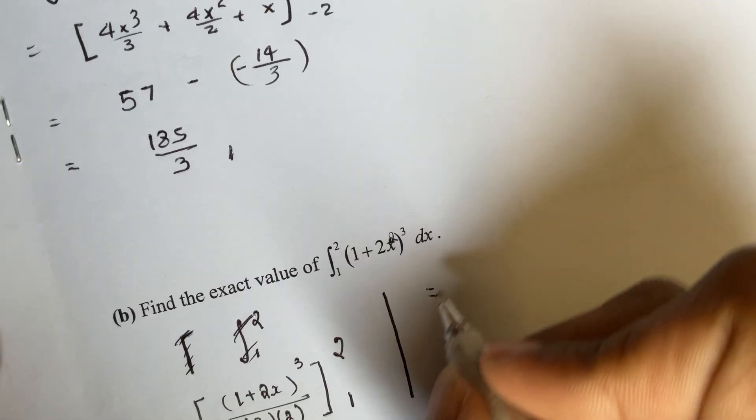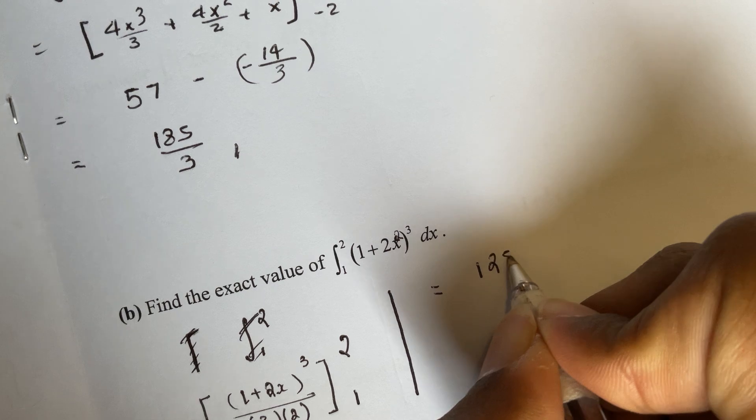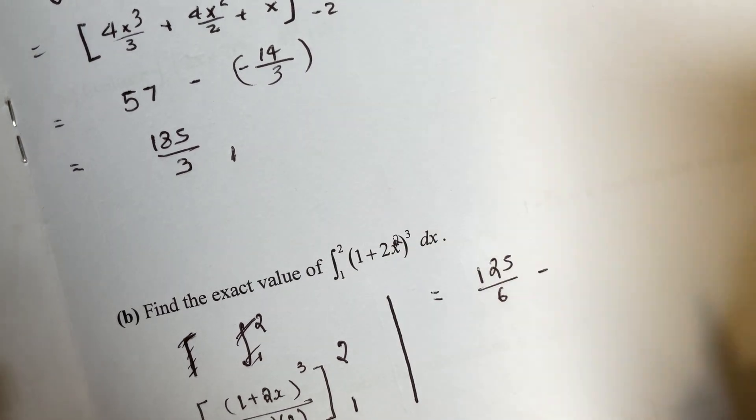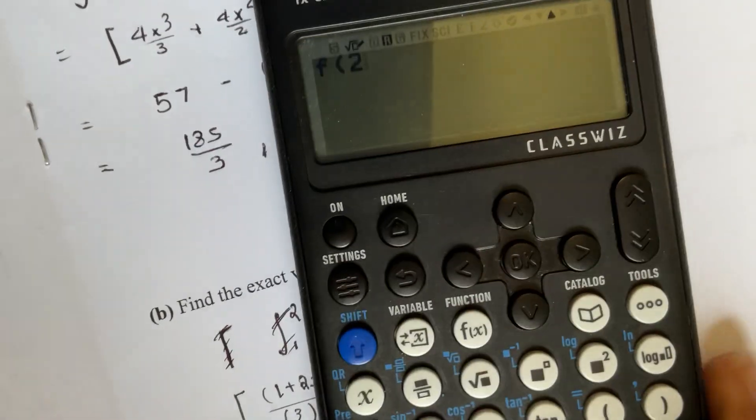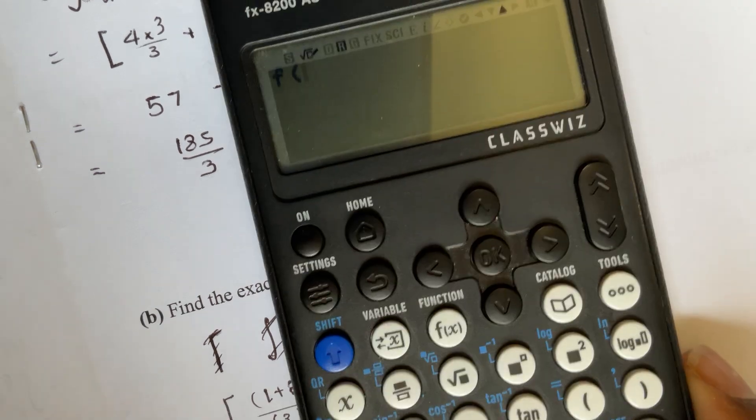125 on 6. So we go put 125 on 6 minus we just sub in 1 again. 9 on 2.